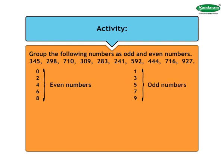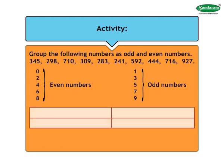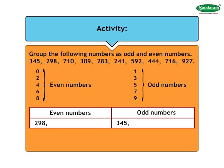So let us begin with the grouping. We will first make two columns: even numbers and odd numbers. We will write each number in the appropriate column. As the digit in the units place of 345 is 5, it is an odd number and should be written in the odd number column. As the digit in the units place of 298 is 8, it is an even number and should be written in the even number column.